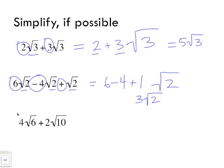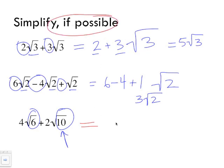In this last example, the two radicals are not exactly the same — we have radical 10 and radical 6. We cannot simplify them because there are no perfect square factors that simplify either radical 10 or radical 6. So this cannot be completed. This is the part where it says 'if possible,' and it is not possible.